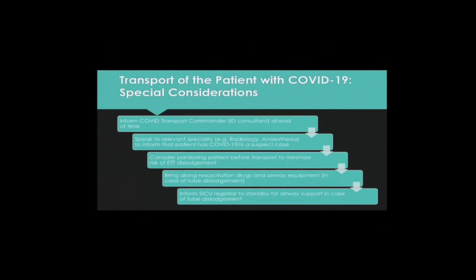Special considerations for COVID-19 confirmed or suspect cases. Always inform the COVID transport commander, who is the ID consultant, ahead of time. Speak to the relevant specialty — for example, radiology if the patient is going for a scan, or anesthesia if the patient is going to OT for an operation — to inform that the patient is a COVID-19 suspect or confirmed case. Consider paralyzing patients before transport to minimize the risk of ETT dislodgement. Bring along resuscitation drugs and airway equipment in case of ETT dislodgement. Inform the SICU registrar to stand by for airway support in case of tube dislodgement.